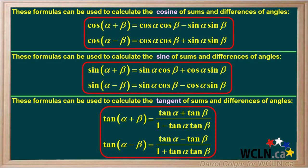Here's a summary of the identities we used to find the cosine, sine, and tangent of sums and differences of two angles. The good news is you don't need to memorize these — they're shown on the formula sheet provided with this course. These will be very useful for finding exact values of trig functions for many more angles than the ones we already know.